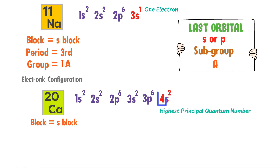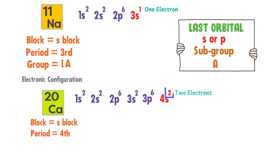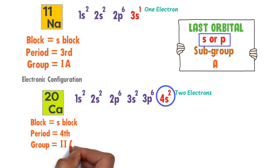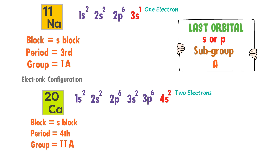The highest principal quantum number of calcium is 4, so the period of calcium is 4th. There are two electrons in the last S orbital, so the group number of calcium is 2nd. We know that if the electrons of an element stay either in S or P orbital, its subgroup is always A. Calcium is an S block element — it is present in the fourth period and second A group.